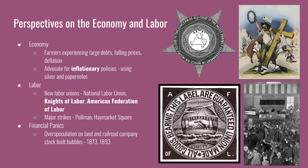New labor unions began to mobilize on a national scale to advocate for the interests of workers, including shortening working hours, safer conditions, and higher pay. The first example is the National Labor Union. The Knights of Labor were a major union that accepted all types of workers—skilled, unskilled, men, women, white, or black. They began to lose members after violence and an explosion at the Haymarket Square strike in Chicago. The American Federation of Labor then took over as the largest labor union and is still around today as the AFL-CIO.